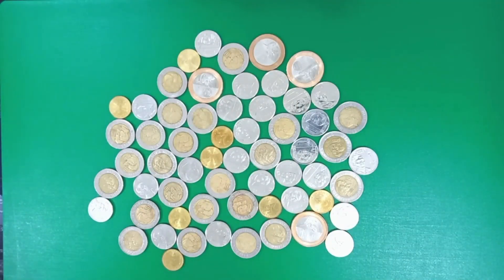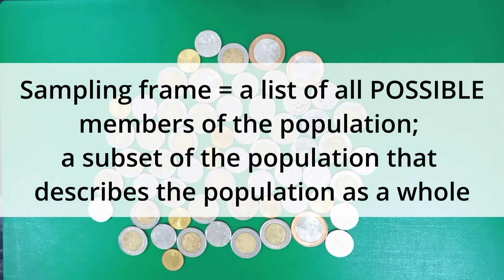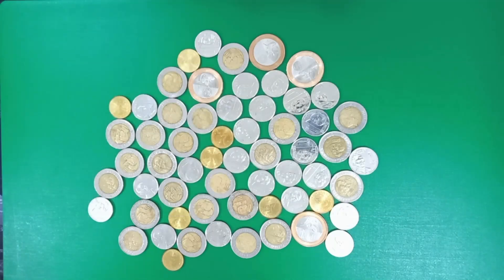Next, we need to identify our sampling frame. A sampling frame is just a list of all the possible members of the population that can be included as samples. The sampling frame is therefore a subset of the population. Ideally, the sampling frame should match the population in terms of most characteristics, but in reality, this may not be the case 100% of the time.